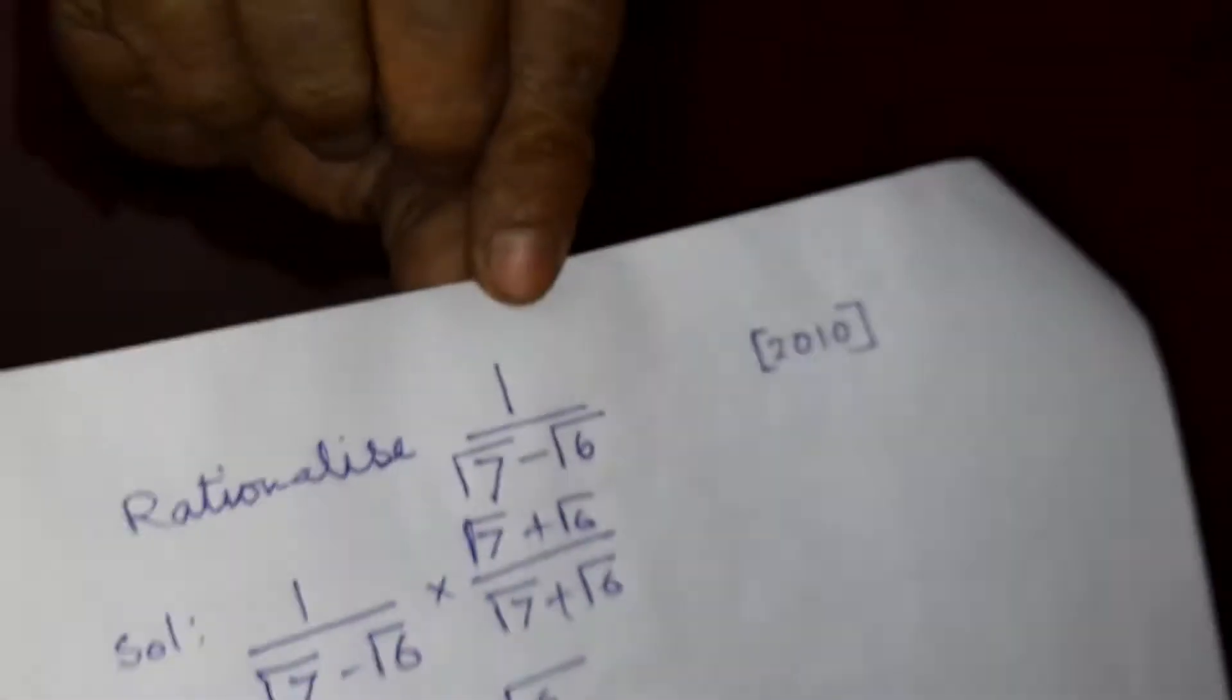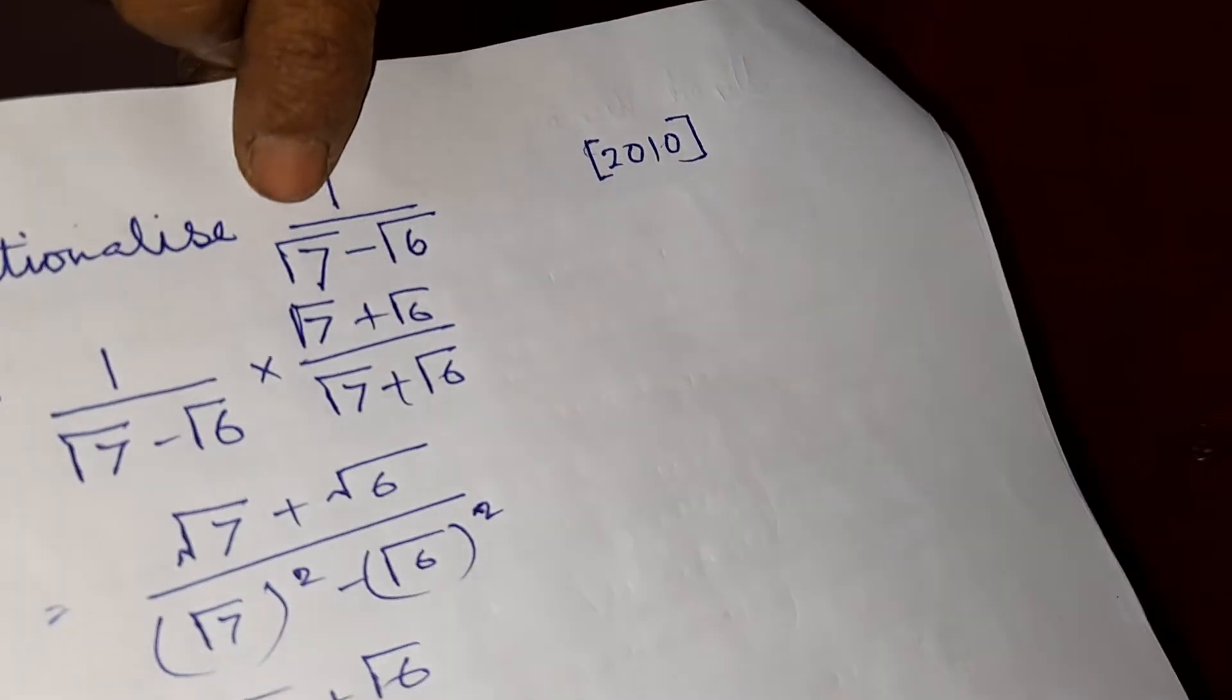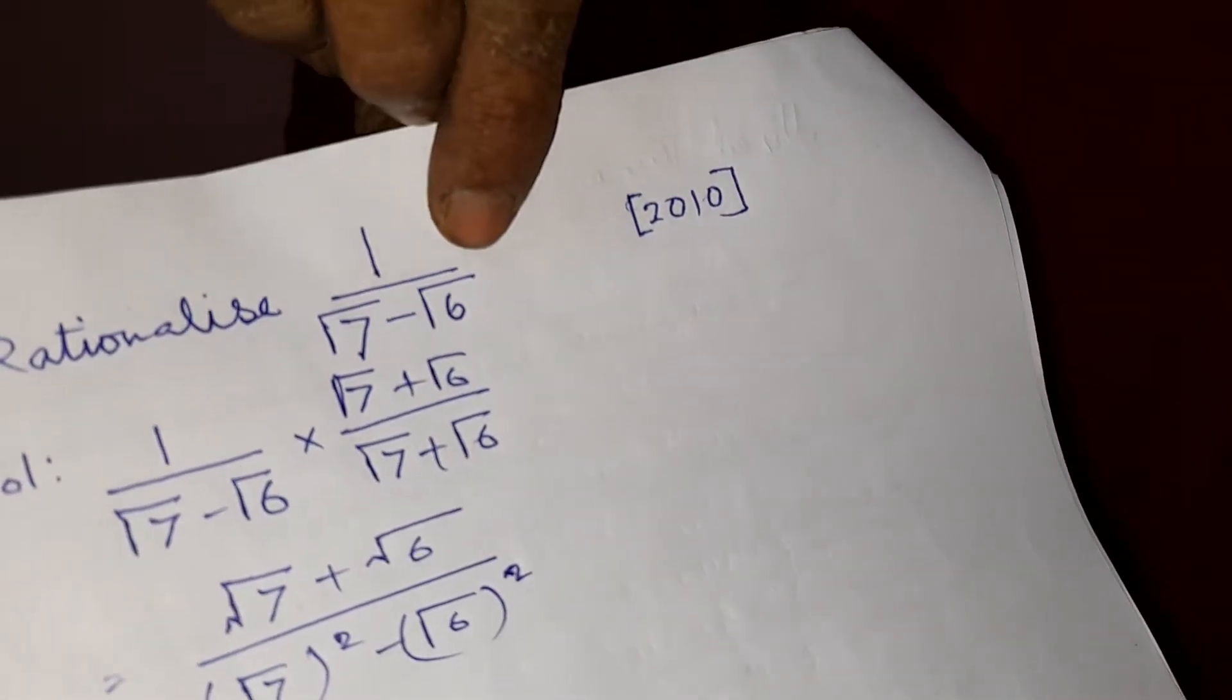Hello guys, this is a question for CBSE Board Class 9 from the topic of rationalization of rational numbers. The question is: rationalize 1 by root 7 minus root 6.